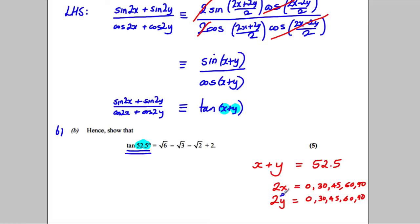So that's telling me that X would have to be either 0, 15, 22.5, 30 or 45 and Y would similarly have to be 0, 15, 22.5, 30 or 45.